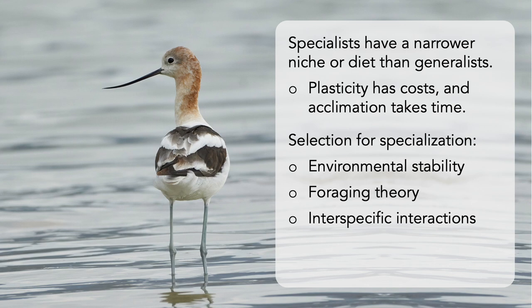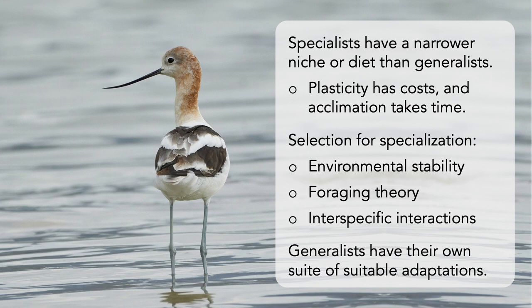While we tend to look at the evolution of specialization from generalization and acknowledge that evolutionary reversals are rare, don't forget that evolution isn't limited to a single direction. Generalists have their own suite of relevant, equally useful adaptations, and in certain cases have no problem out-competing specialist species.